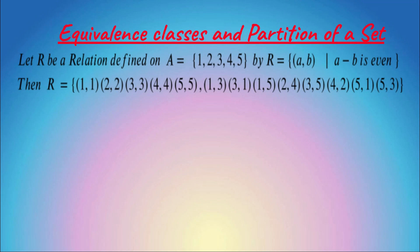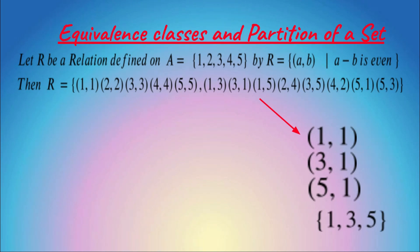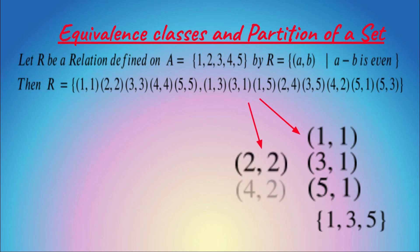Now, take the elements which are related to 1: (1,1), (3,1), and (5,1) — so 1, 3, and 5 are related to 1. Similarly, (2,2) and (4,2) — so 2 and 4 are the elements which are related to 2.